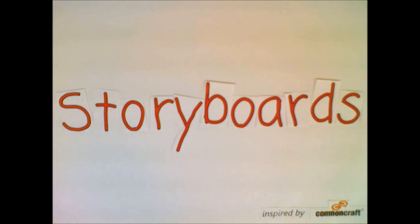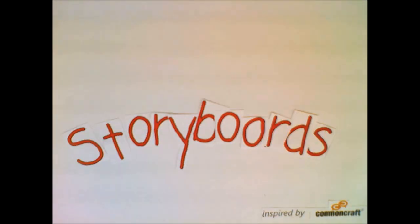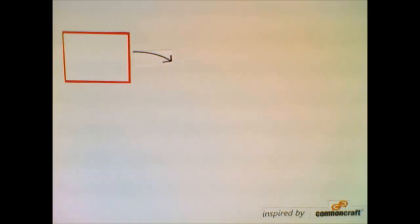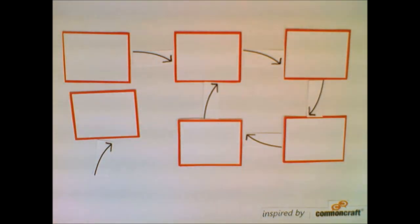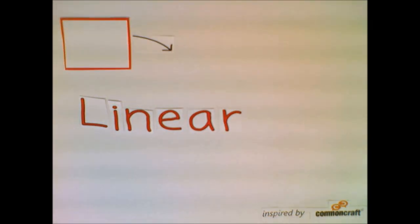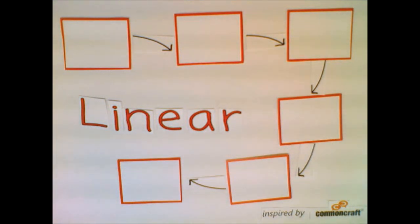Storyboards are used to plan a new system, which act as a set of directions for the construction of it. This is a frame-by-frame plan which includes navigational paths, images and information. There are four formats of a storyboard. A linear storyboard allows a user to move through each scene in a sequential manner by following a sequence. They are typically used for films.